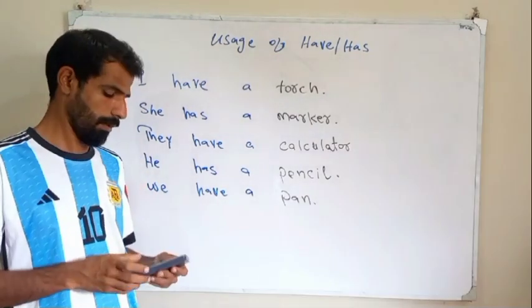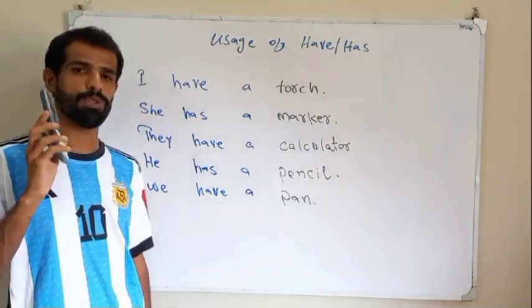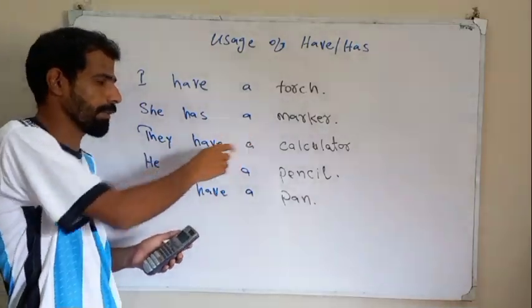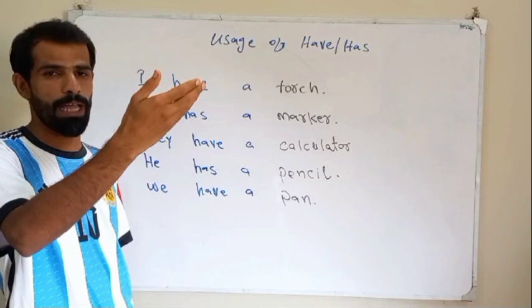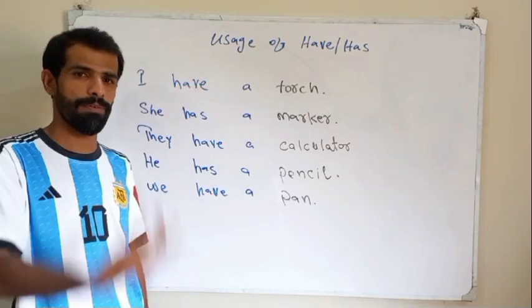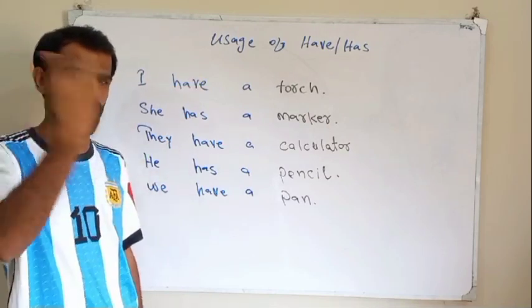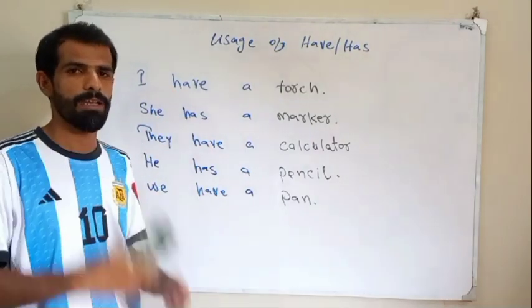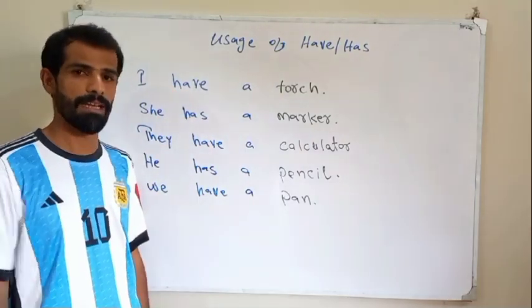Now I will show the calculator. Calculator, it means they have a calculator. They both have a calculator. It means my friends, my sisters, my colleagues, they have a calculator. They use for calculating in their daily life.